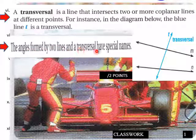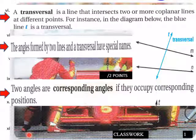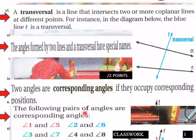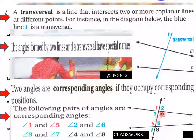The angles formed by two lines and a transversal have special names. Two angles are corresponding if they occupy corresponding positions. The following pairs of angles are corresponding angles: angle 1 and angle 5, angle 2 and angle 6, angle 4 and angle 8, and angle 3 and angle 7.